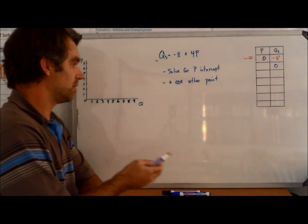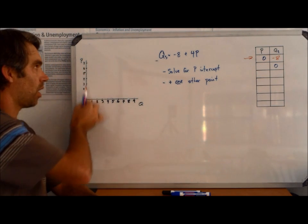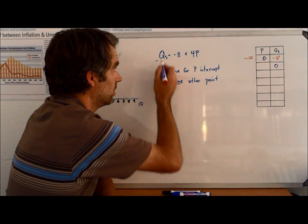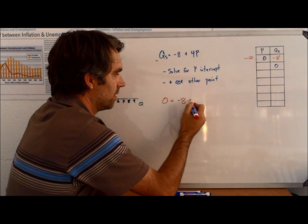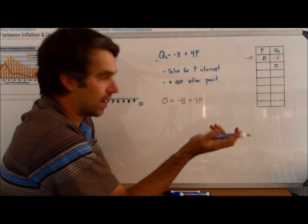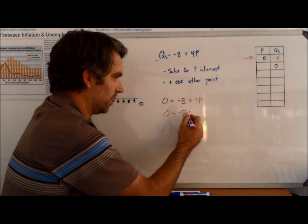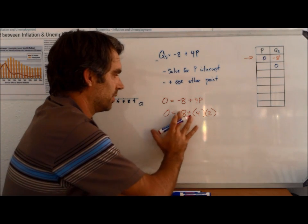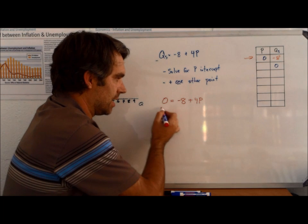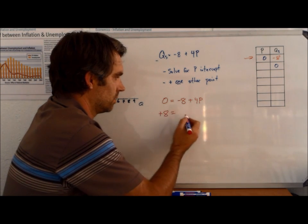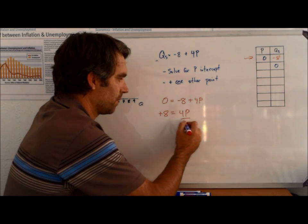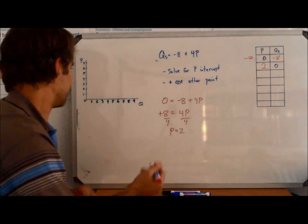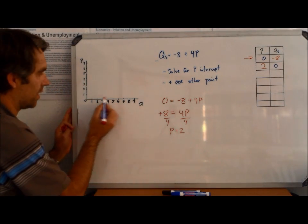So what we do need to find is when quantity is 0, where are we on the P-axis? Where are we on the Y-axis? So we're going to solve this this way. We're going to let quantity equal 0. So it's going to be 0 is equal to negative 8 plus 4P. Now some of you can look at that right now and go, well, 0 is equal to negative 8 plus 4 times 2. So 2 is what we need. But the more proper way to solve this is we need to get 8 over onto this side. And that leaves us with 4P. We divide by 4 on each side. And P is equal to 2. So there's one of our points. So we can go ahead and put that in. So quantity of 0, price of 2.